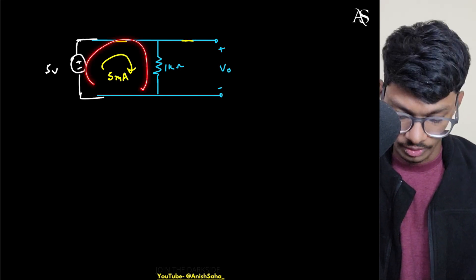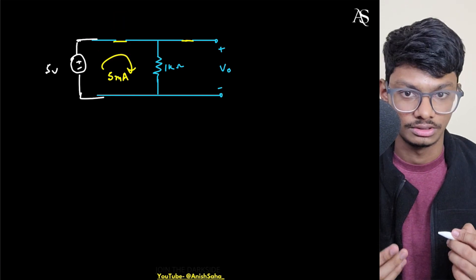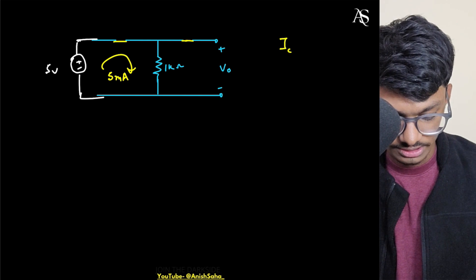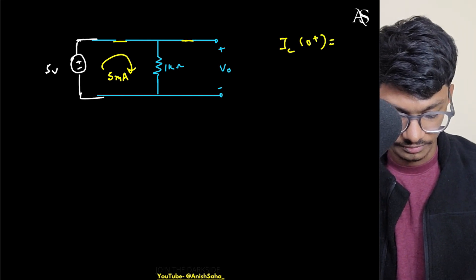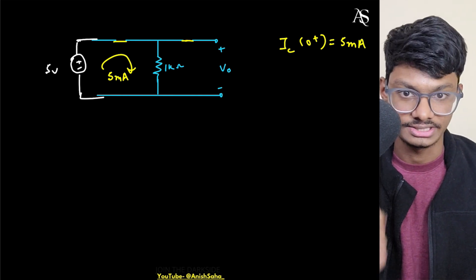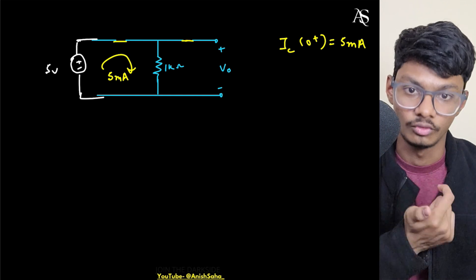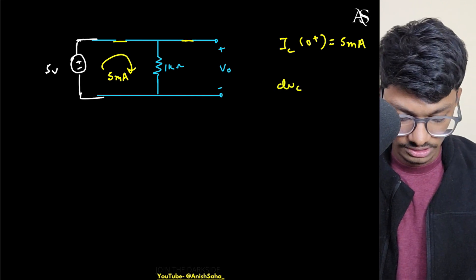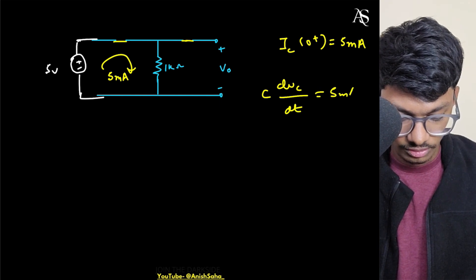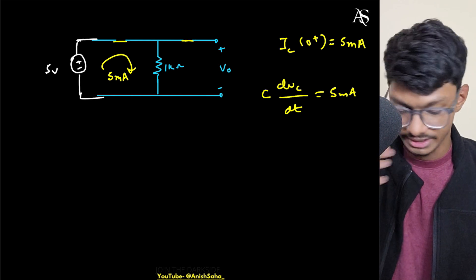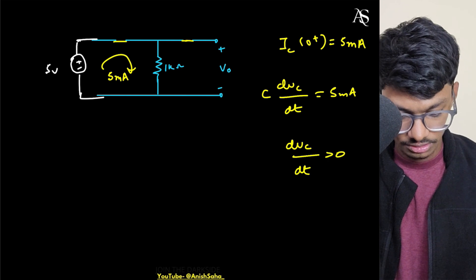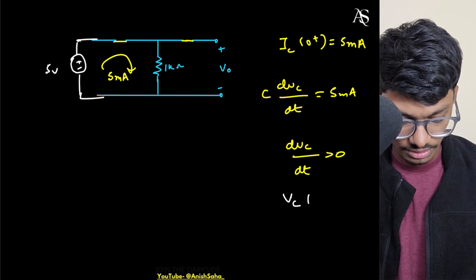So 5 milliamps of current is flowing, meaning the capacitor current IC goes from zero to 5 milliamps — IC(0+) equals 5 milliamps. Since IC is defined as C times dVc/dt, we get dVc/dt greater than zero, which means the voltage across C1 is increasing.